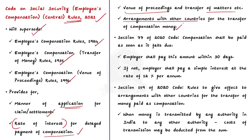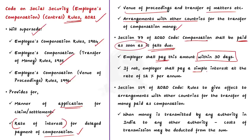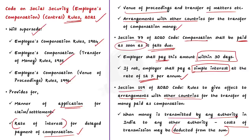Two important provisions of the draft rules: First, Section 77 of the Code says that compensation for loss or damage shall be paid as soon as it falls due. The draft rule specifies the employer shall pay the compensation within a period of 30 days; if not paid, the employer shall pay simple interest at a rate of 12% per annum for those unpaid days. Second, Section 159 of the Code provides for rules to give effect to arrangements with other countries for transfer of compensation money. The draft says that when any sum is transmitted by any authority in India to another authority, the cost of such transmission may be deducted from the sum transmitted.